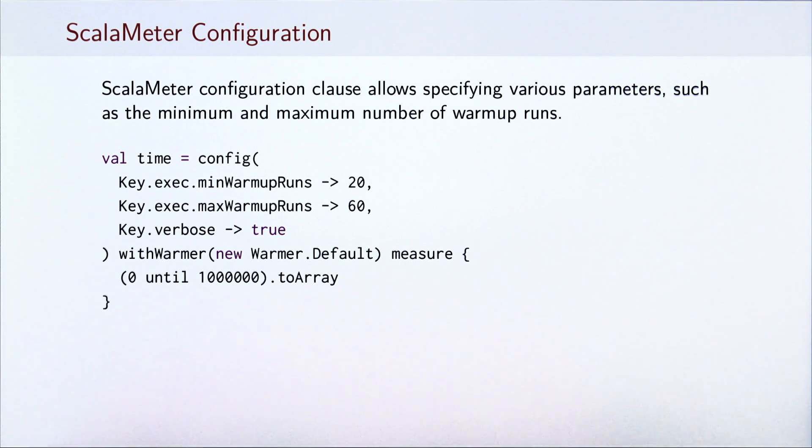In some cases, we are not entirely satisfied with the default parameters that the Scalameter uses. For instance, the behavior of the warmer object can be governed with this configuration clause. Inside the configuration clause, we specify several keys mapped to different values. In this case, we change the minimum and maximum number of warm-up runs that Scalameter executes. We also increase the verbosity of the standard output.